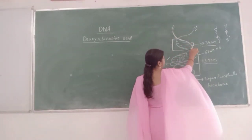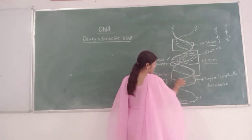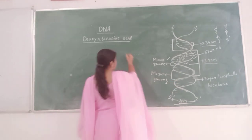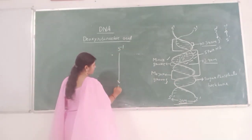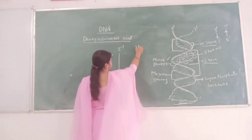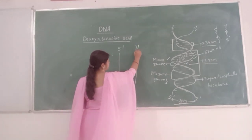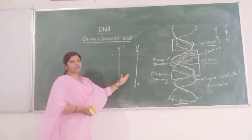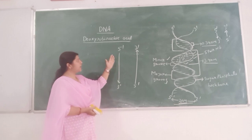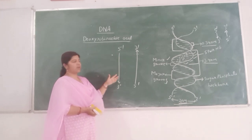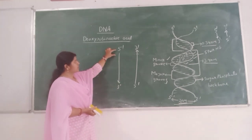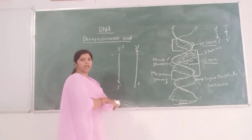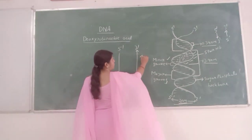One strand is 5' to 3' and another strand is 3' to 5'. These two polynucleotide chains are complementary to each other and both strands are antiparallel. This direction is 5' to 3' and this direction is also 5' to 3' — both are antiparallel and complementary.